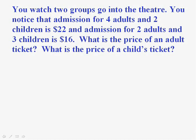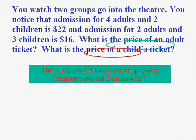Let's try another. Suppose the sign was broken for prices and you watch two groups go into a theater. You notice that admission for four adults and two children cost one of the groups $22, and the admission for two adults and three children cost another group $16. You should be able to figure out the price of an adult ticket and the price of a children's ticket. Now this smells like a system problem. Why? Because there are two unknowns. Note that you want to know two things: the price of an adult ticket and also the price of a children's ticket. So this is going to be a system problem.